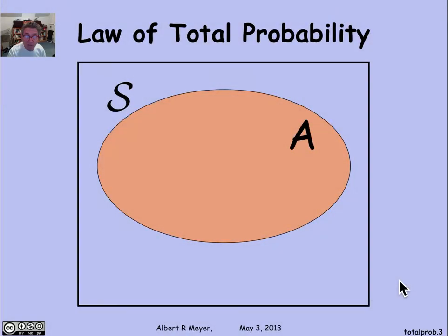Here's the way to understand the law of total probability abstractly. It starts off with set theoretic reasoning. Suppose that I have a set A embedded in some larger sample space S. So A is really an event, but we're just going to think of it as a set.